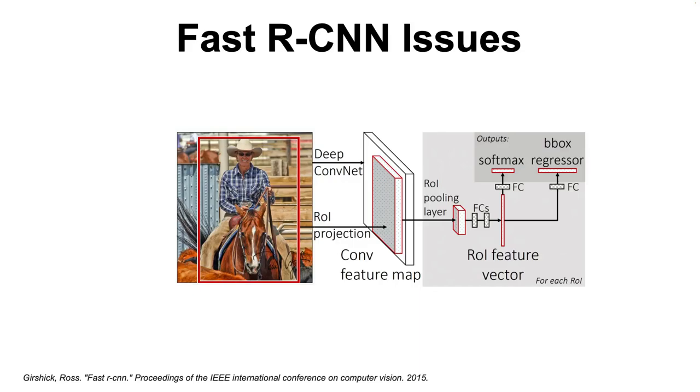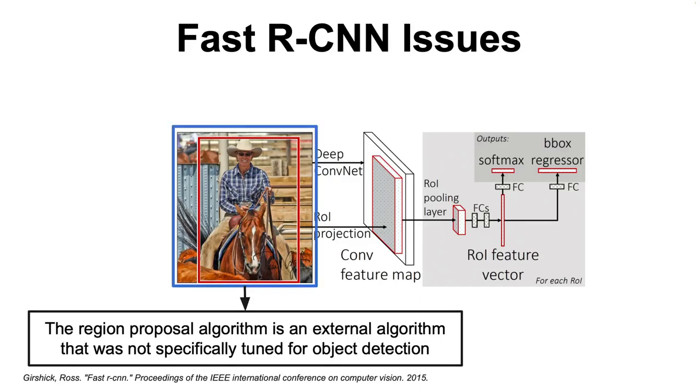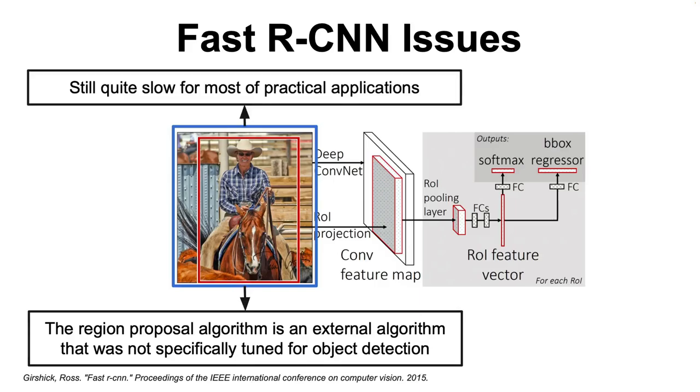However, the Fast R-CNN model still had a major drawback: the region proposal algorithm, which is still quite slow for most real world applications, while also being an external general algorithm that is not fine-tuned for the object detection problem that we are trying to solve.